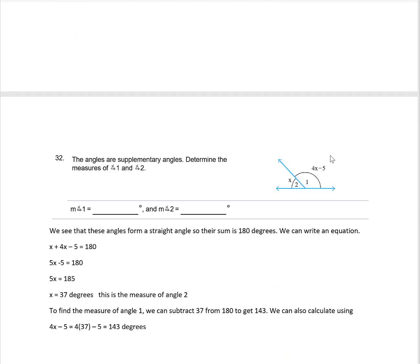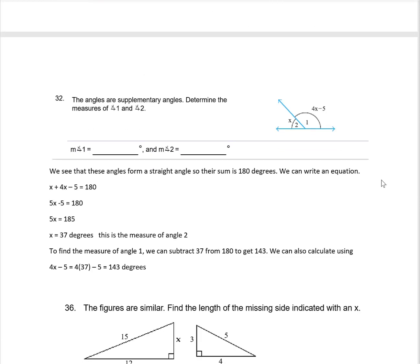For number 32, we have two angles that are supplementary, so their measures add to 180. Setting up the equation: X plus 4X minus 5 equals 180. Combining X terms on the left: 5X minus 5 equals 180. Adding 5 to both sides: 5X equals 185. Dividing by 5: X equals 37, which is the measure of angle 2. For angle 1, subtract 37 from 180 to get 143 degrees, or use the formula 4X minus 5, giving 4 times 37 minus 5, which also gives 143 degrees.